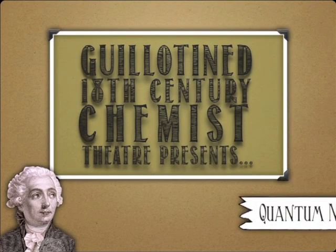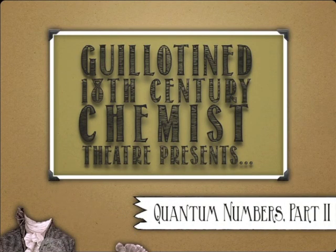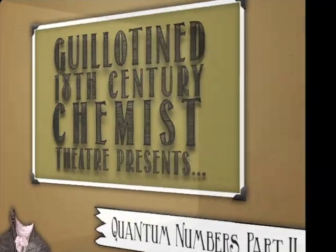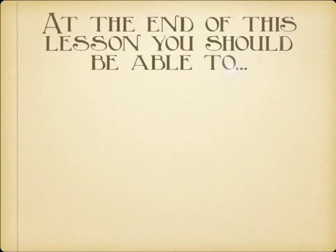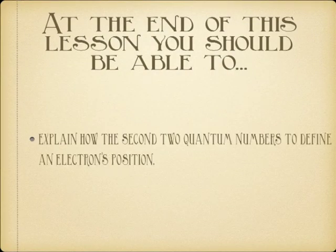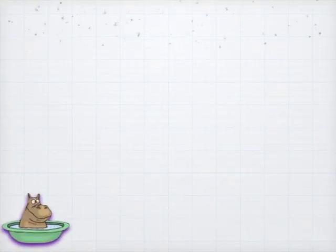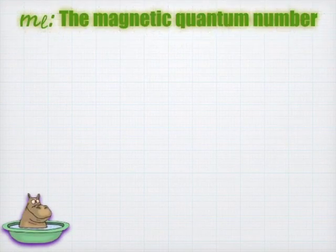Hey, welcome back to guillotined 18th century chemist theater. We are on to quantum numbers part two. In the last episode, we introduced the concept of quantum numbers and electrons' address. And we went through the first two. So we talked about what N was and we talked about what L was. We'll finish up today talking about the last two quantum numbers. That shouldn't take too long.